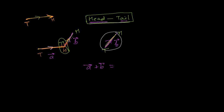A plus B is now represented from the initial point where we start the journey to the final point where we finish. So this gives you the addition of the two vectors — this is vector A plus vector B.